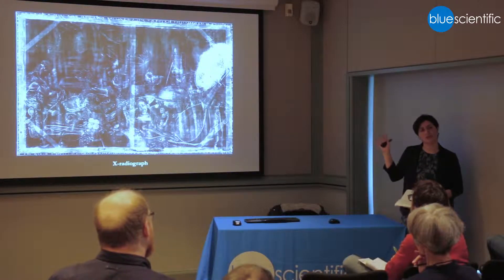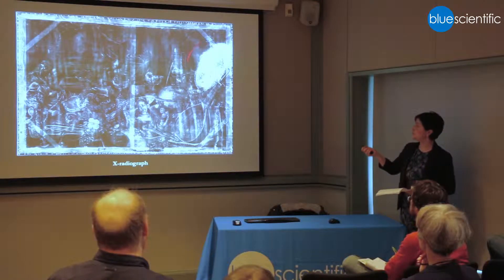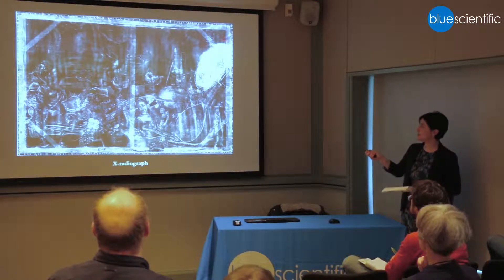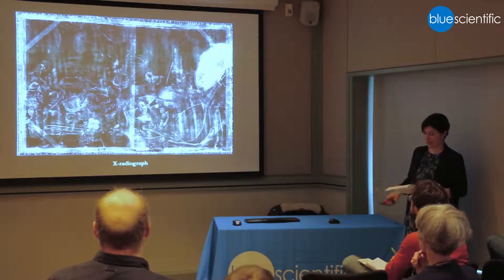Before we look at the elemental maps, this is the x-radiograph of the painting. They did infrared imaging as well before they conserved the painting recently, but it didn't do much for this painting, so I'm not showing that image. The x-radiograph is interesting because it shows a number of things, including two subsequent changes to the area on the right-hand side.